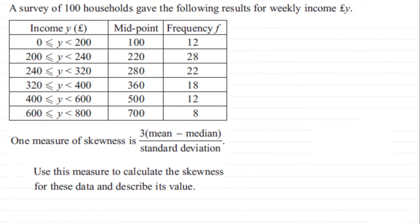Hi. Now, in this next part, we're asked to work out a measure of skewness. We're told that one measure of skewness is three times the mean minus the median, divided by the standard deviation.